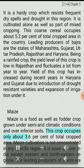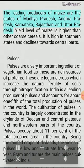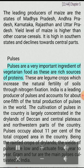Maize is a food as well as fodder crop grown under semi-arid climatic conditions and over inferior soils. This crop occupies only about 3.6% of total cropped area. Maize cultivation is not concentrated in any specific region; it is sown all over India except eastern and northeastern regions. The leading producers of maize are Madhya Pradesh, Andhra Pradesh, Karnataka, Rajasthan, and Uttar Pradesh. Yield level of maize is higher than other coarse cereals. It is high in southern states and declines towards central parts.